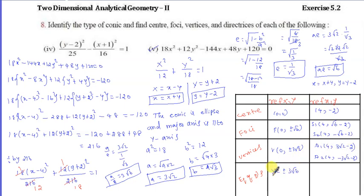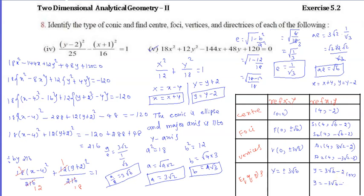Next we calculate the directrices. Replacing Y with y plus 2: the first directrix is y equals 3 root 6 minus 2, and the second directrix is y equals minus 3 root 6 minus 2.